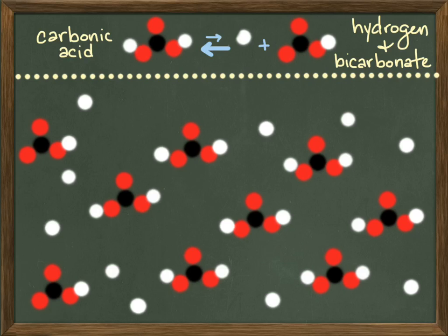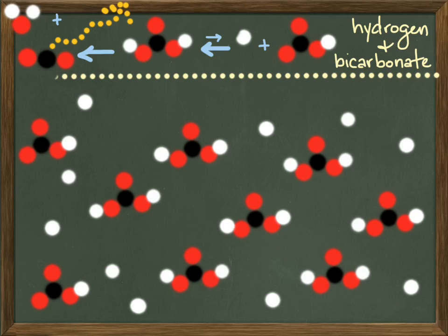A buildup of carbonic acid could also favor a shift to carbon dioxide and water, and you could exhale more CO2 to bring equilibrium back.